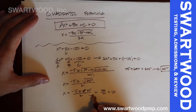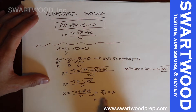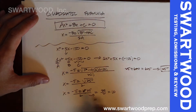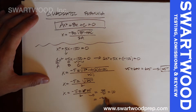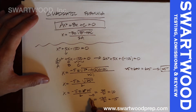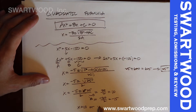Going both ways: negative 5 plus 25 gives us 20 over 2, which is 10. Or negative 5 minus 25 gives us negative 30 over 2, which is negative 15. Both are viable answers, so x equals 10 or x equals negative 15.